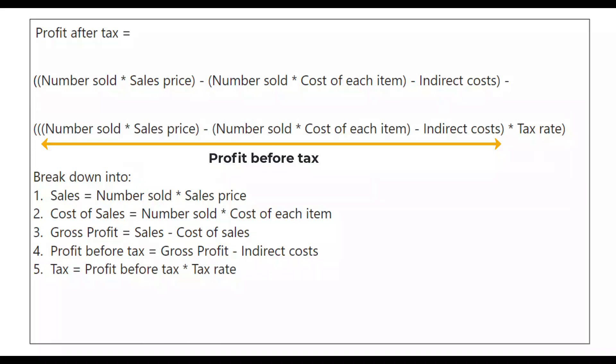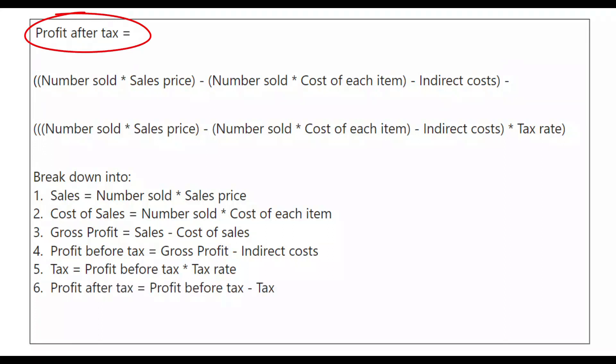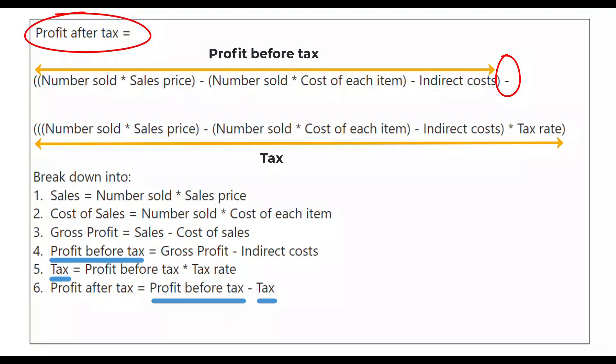In step five, tax equals, and I use the profit before tax calculated at step four and multiply this by the tax rate. In the final step, as all the brackets have been considered, the only operation not yet looked at is the minus sign here, which is required to calculate the profit after tax. So, profit after tax equals profit before tax minus tax. And we've already calculated these two elements. So, we just write profit after tax equals profit before tax minus tax.